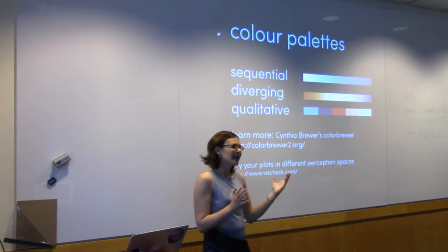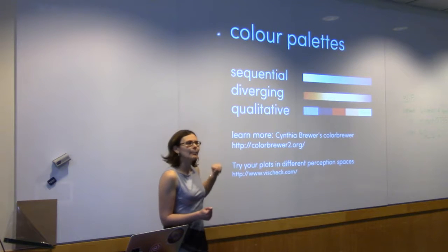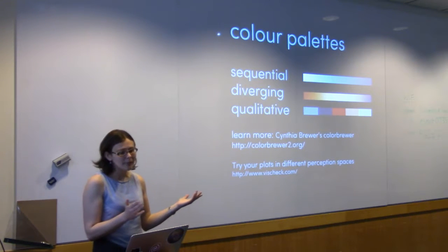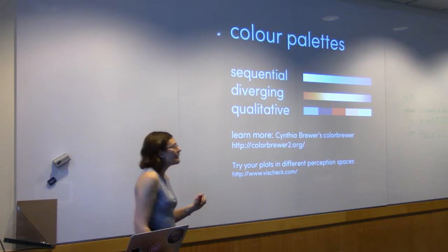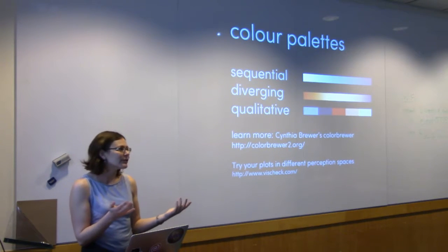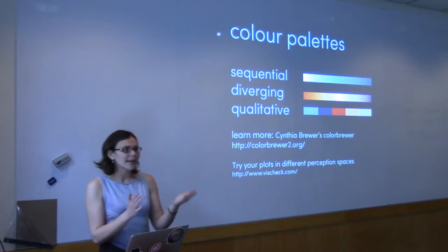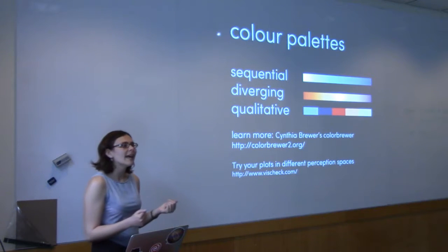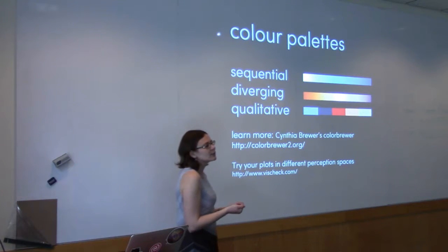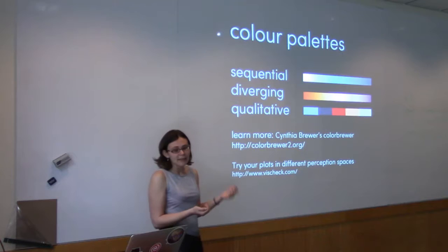You first have to think about what sort of data you have. Do you have data that's best represented as continuously varying — maybe something like temperature? Then you probably have sequential type data. If you have data with an intrinsic transition somewhere within its values — a level you need to pull out, maybe an inflection point or transition in regime — then you probably have something better mapped with a diverging palette. And if you need to plot multiple unrelated things, then you have qualitative data.